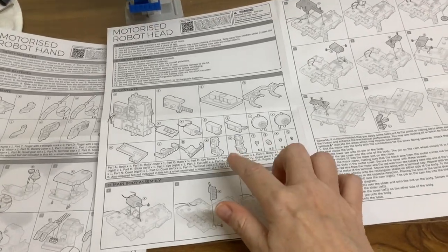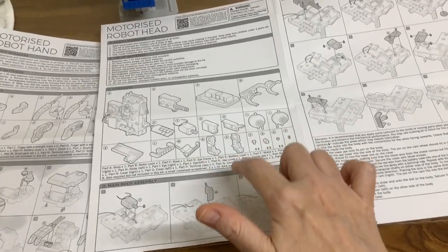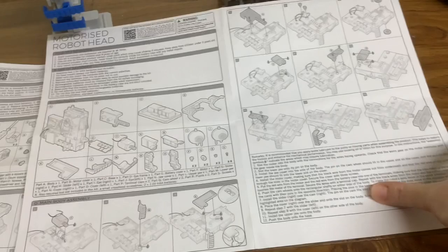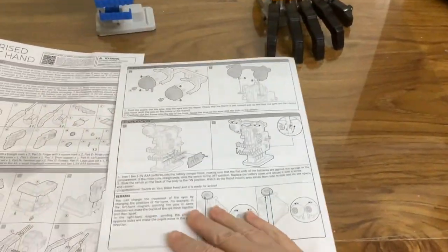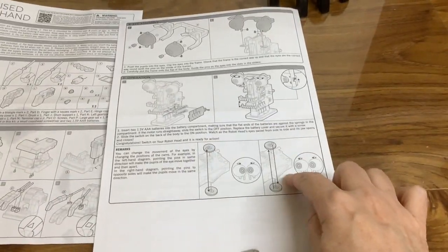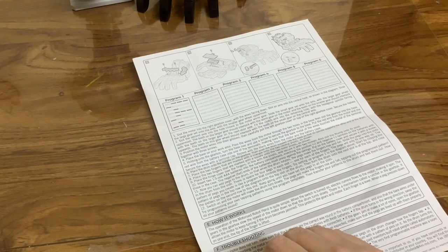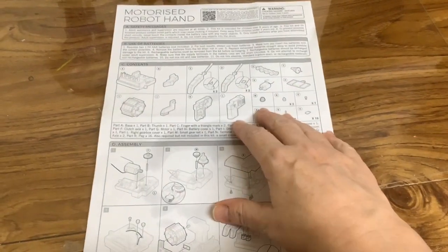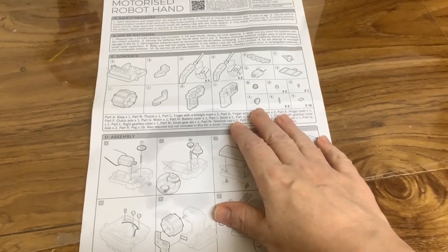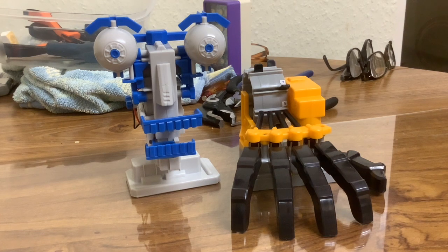As I say, the head one was a lot more involved. For a start, you've got three pages of instructions, whereas the hand was just over a page of instructions. So yes, I would say that the head was more difficult to build than the hand. It took longer. I would say the hand was a lot simpler to put together.